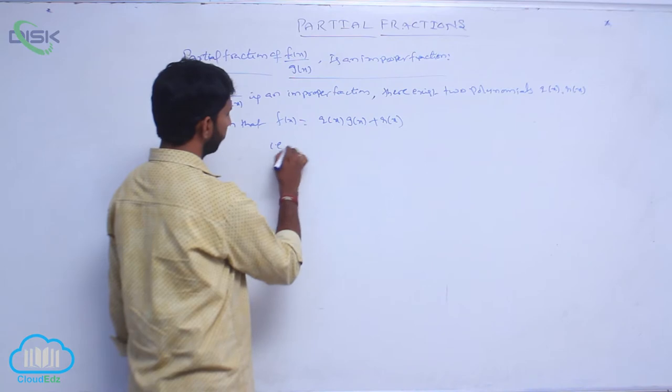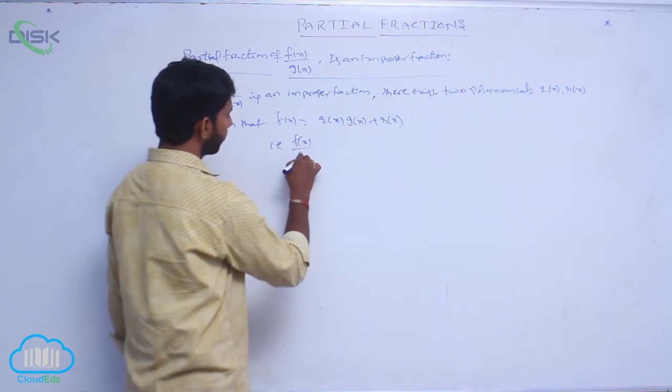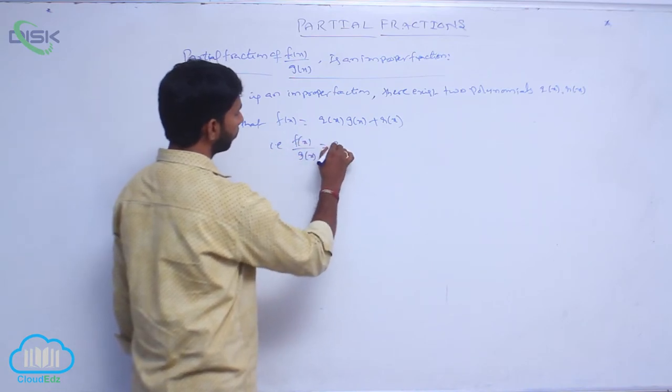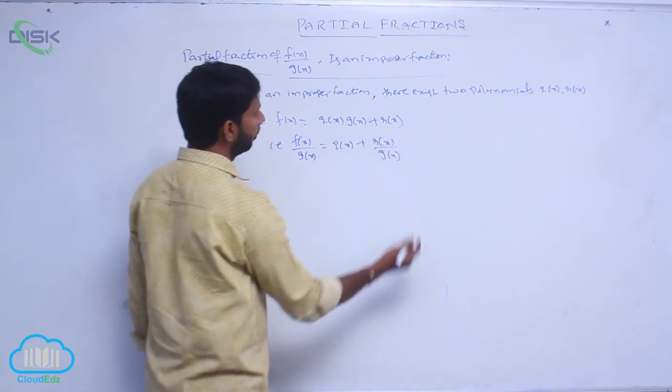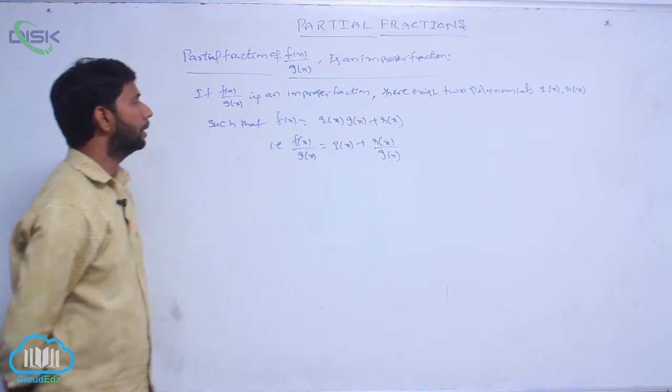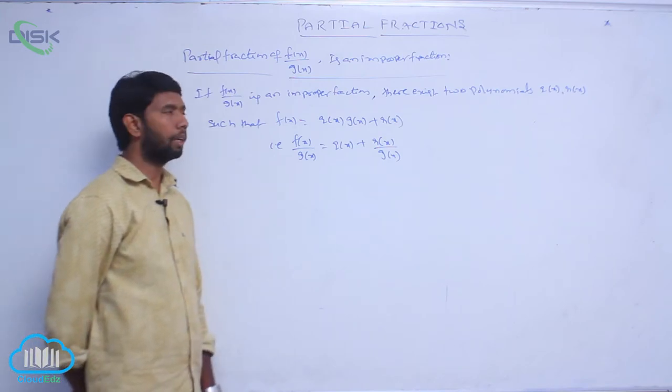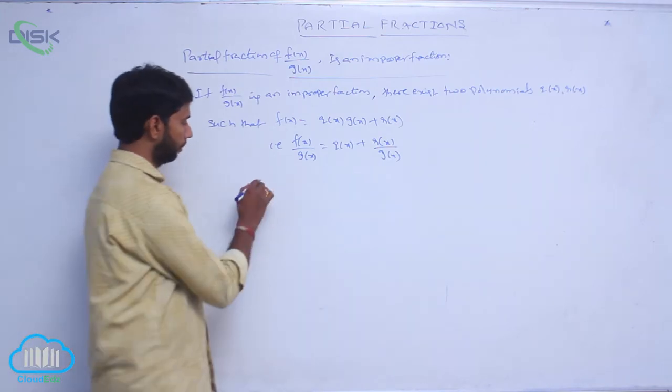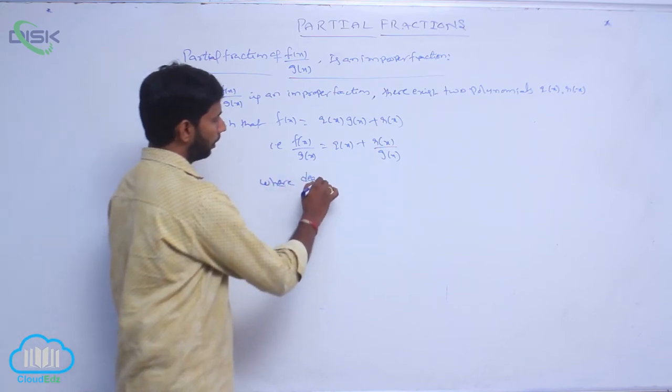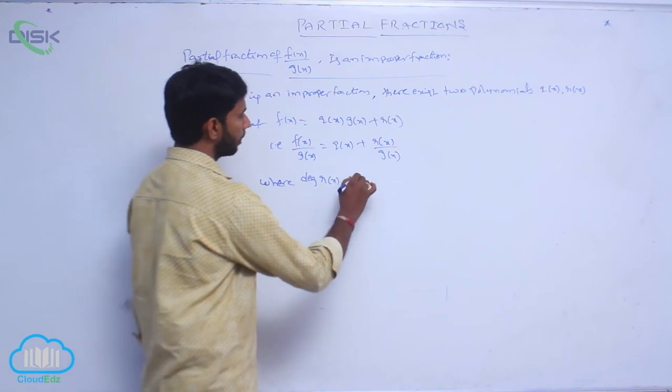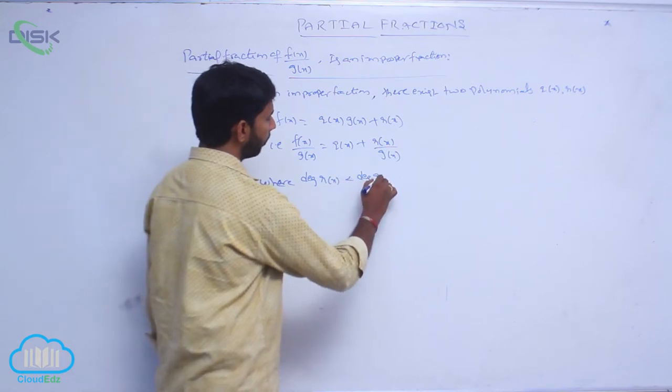That is, f of x by g of x is equal to q of x plus r of x by g of x, where degree of r of x is less than degree of g of x.